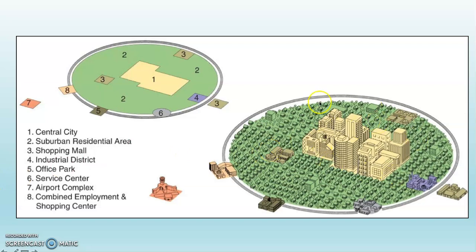You can see, once again, there is indeed a CBD — a central business district right here. But notice that everything else is spread around. Out here we have the airport complex, similar to what I just mentioned with Santa Ana Airport. There's also a combined employment and shopping area — maybe this is a version of Disneyland in some ways. Service area, airport complex — all of these things draw people who work in them and may not actually go into the central business district.